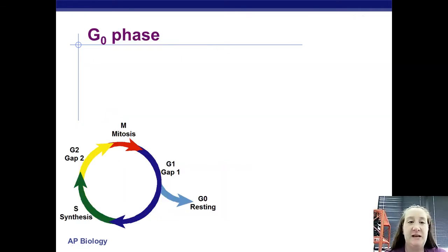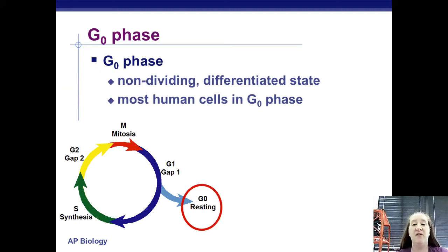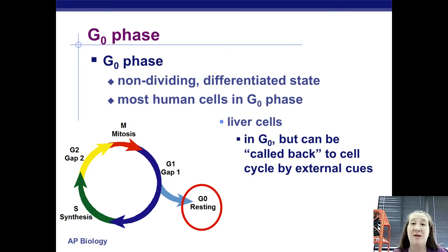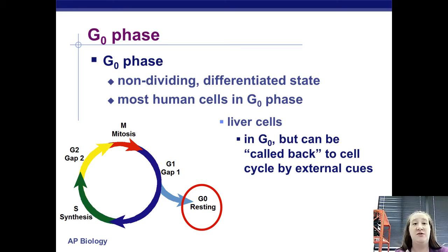G0 is a non-dividing, differentiated state. Most of your cells — all your muscle cells, all your nerve cells — are in G0 and will never divide. It's considered a resting phase, but the cell is still doing its job as a brain cell or muscle cell. It's just never going to replicate its DNA or divide. Liver cells can be called back from G0 depending on external cues. That's why a living liver donation works — you can take a third of someone's liver, give it to another person, and both the donated piece and the remaining liver will regenerate.